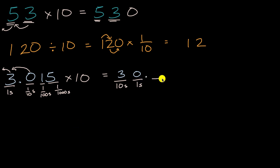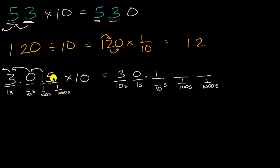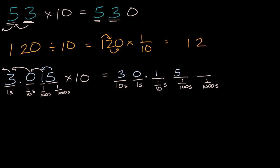And then we'll put our decimal. Now what's going to go into the tenths place and the hundredths place — this one is going to shift one place to the left into the tenths place. And then the five that was in the thousandths place is now going to shift one place to the left into the hundredths place. We see that every digit has shifted one place to the left, so this is equal to 30.15.